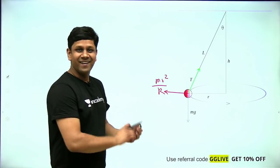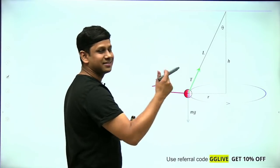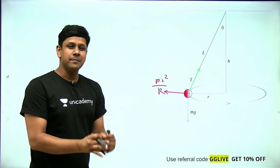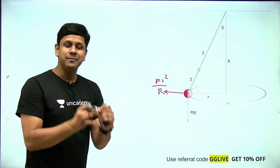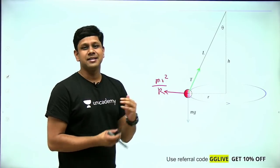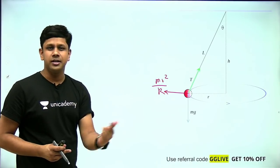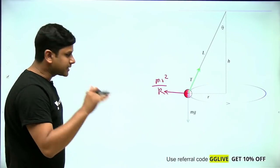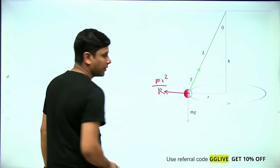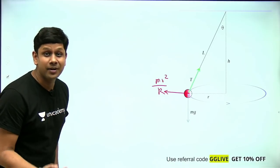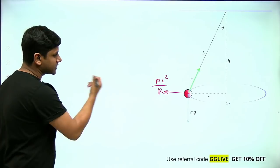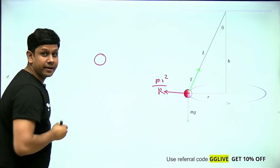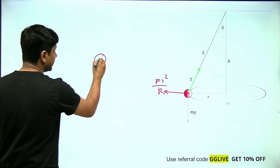This is the right way: the centrifugal force is directed horizontally outward, mv²/r. Once you have understood that, you can solve this question in the next two minutes. Now we make the free body diagram of the bob.